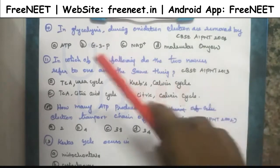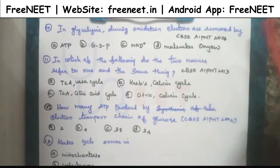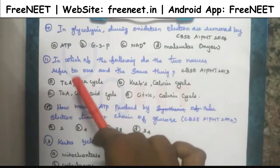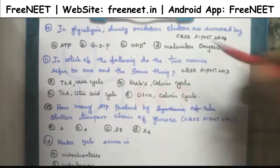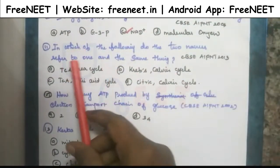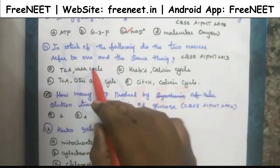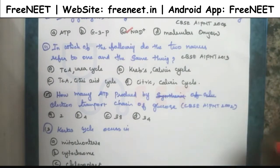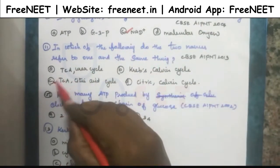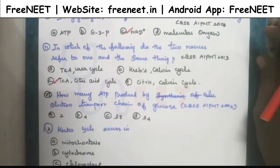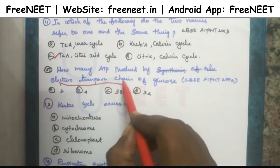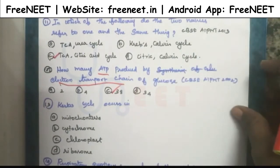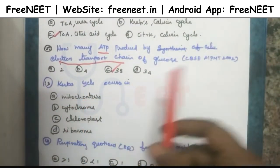In glycolysis, during oxidation, electrons are removed by NAD+. G3P participates and molecular action is also involved. The next question asks: which of the following two names refer to one and the same thing? The answer is C — TCA is nothing but the citric acid cycle; TCA means tricarboxylic acid. Another question: how many ATP are produced by the electron transport chain? The answer is 34 ATP. The Krebs cycle occurs in the mitochondria.